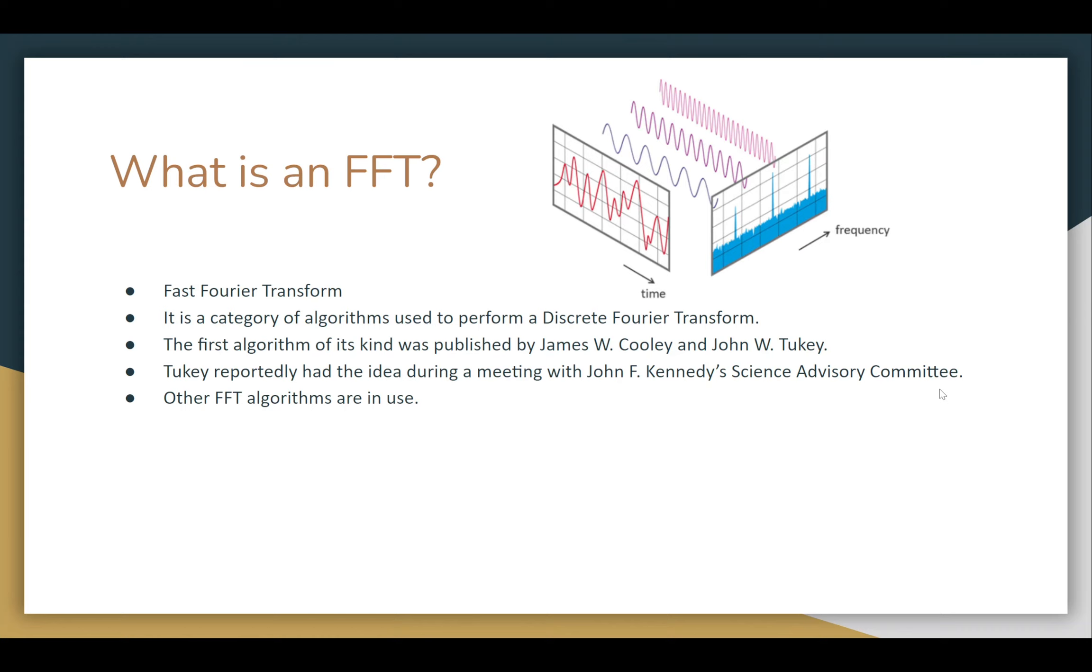An FFT is a fast Fourier transform. It's within the category of a discrete Fourier transform, and the Cooley-Tukey algorithm is the one we're going to be talking about today. It's still one of the most popular fast Fourier transform algorithms, and it was published in 1965. Other algorithms that are fast Fourier transform algorithms include Prime Factor algorithm and Raider's FFT algorithm.